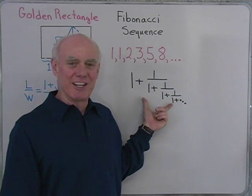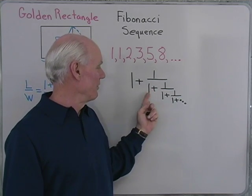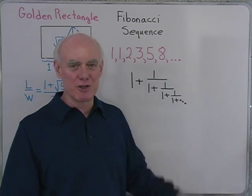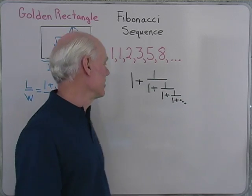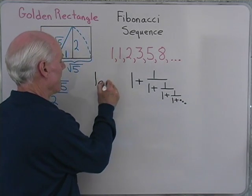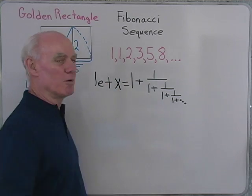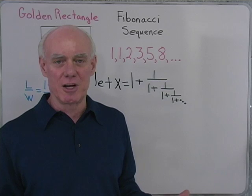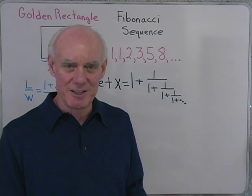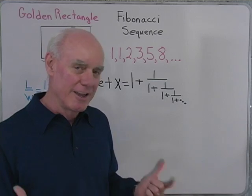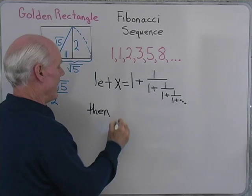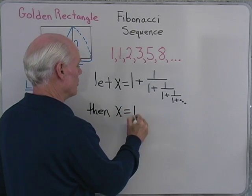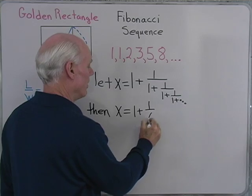Okay, so here I have the continued fraction 1 plus 1 over 1 plus 1 over 1 plus 1 over so on and so forth. So it goes infinitely far down like this. Now, if I can say let's let x be equal to whatever this continued fraction comes out to be. We'll just say let x be equal to the continued fraction. Then it must be true that x is equal to 1 plus 1 over x.